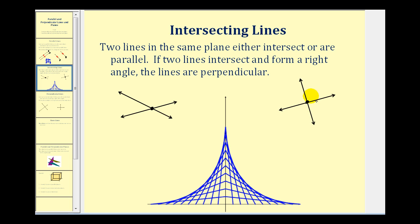To show that lines intersect at a right angle, we often put a little square at the intersection showing the right angle. So if this is line L and this is line M, we can state that line L is perpendicular to line M. I also included this figure because it's a neat design formed by intersecting line segments.